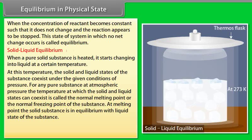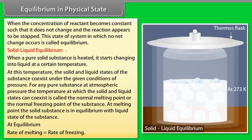Consider ice and water at 273 Kelvin — the melting point of ice — taken in a perfectly insulated thermos flask. The temperature as well as the masses of ice and water remain constant. This represents a dynamic equilibrium between ice and water. Since there is no change in mass, the number of molecules going from ice into water equals the number going from water into ice. Thus, at equilibrium, the rate of melting equals the rate of freezing.